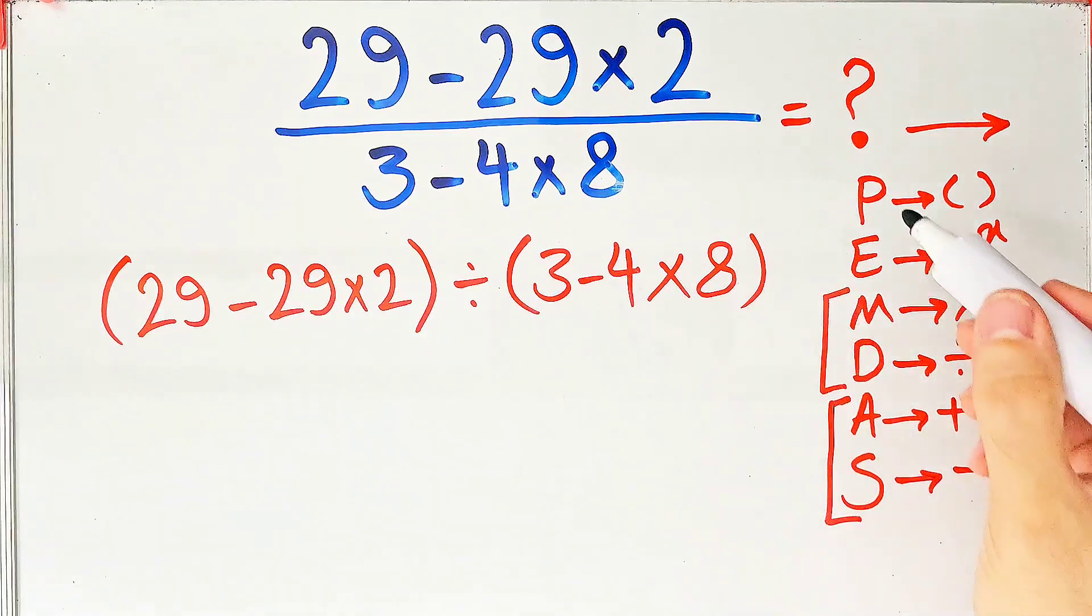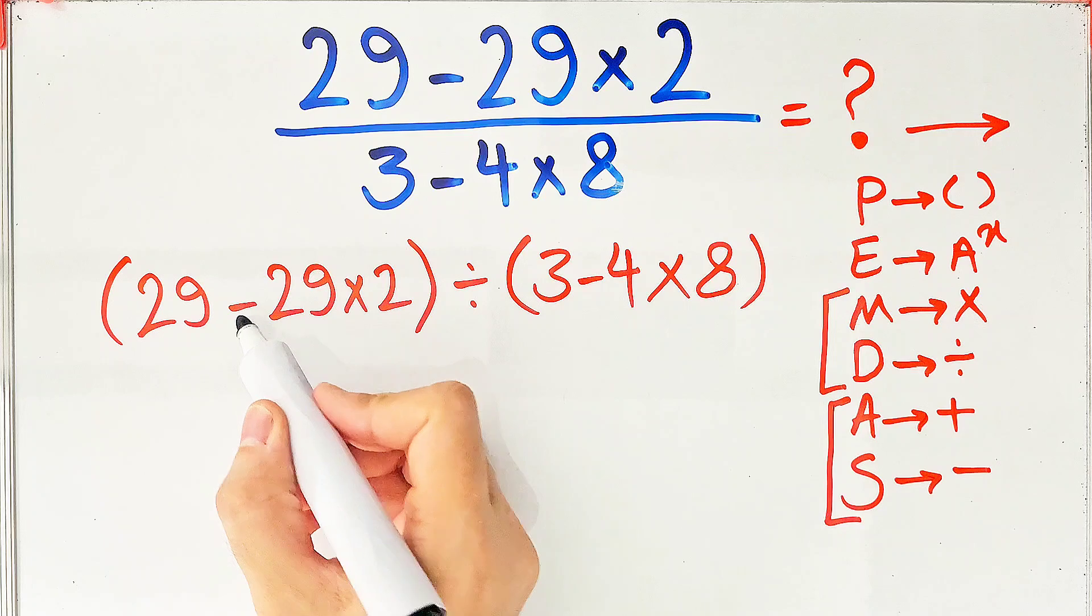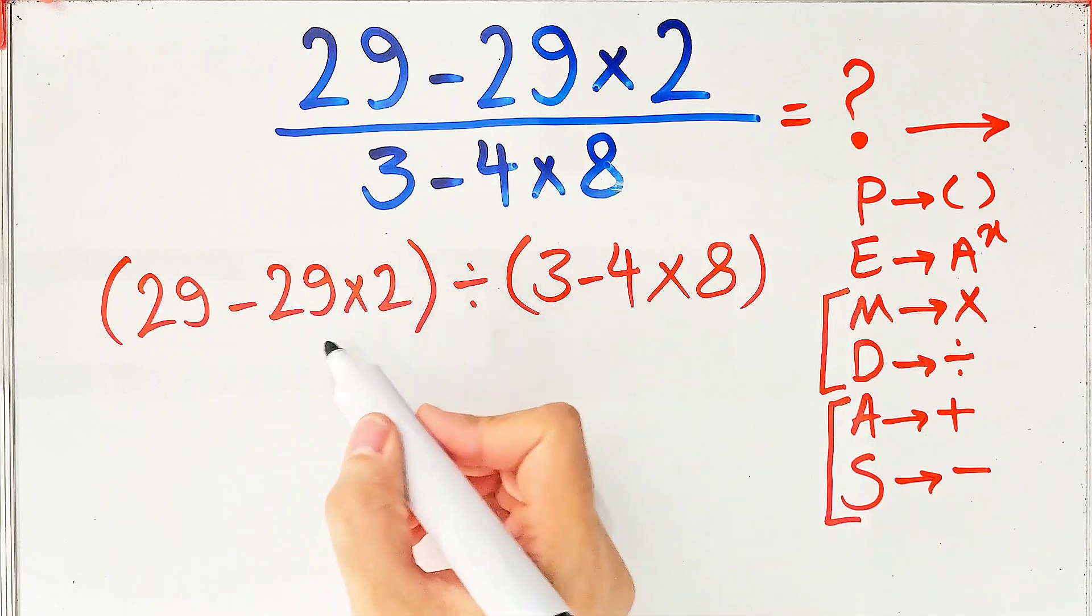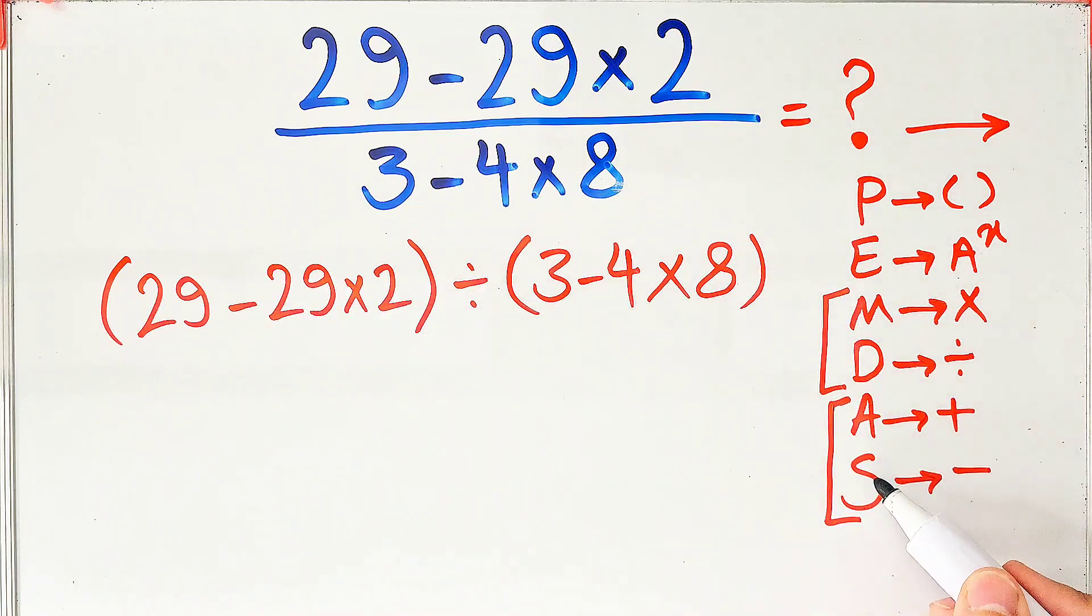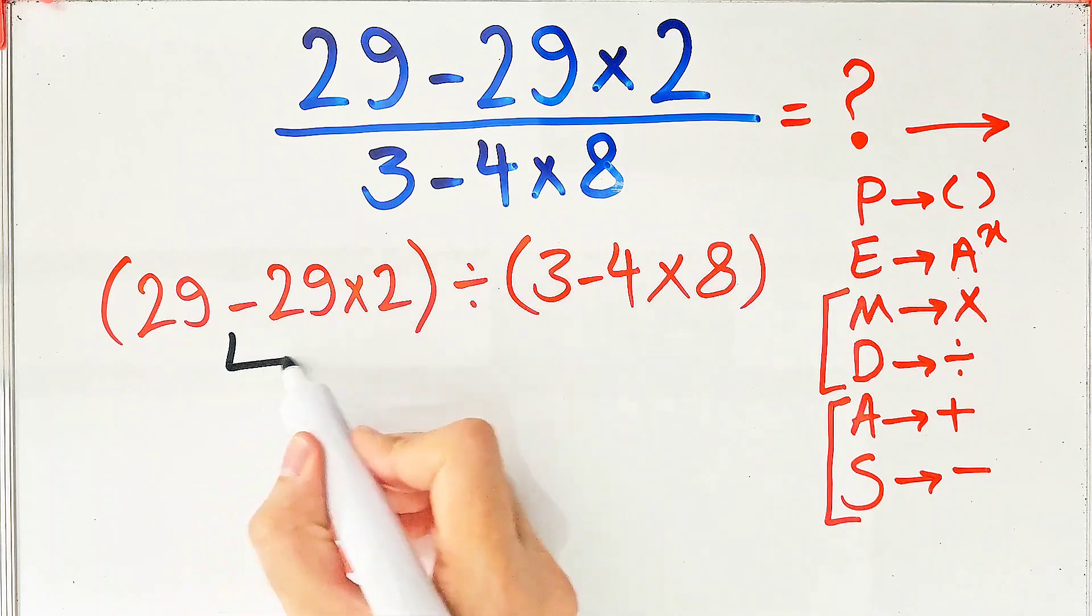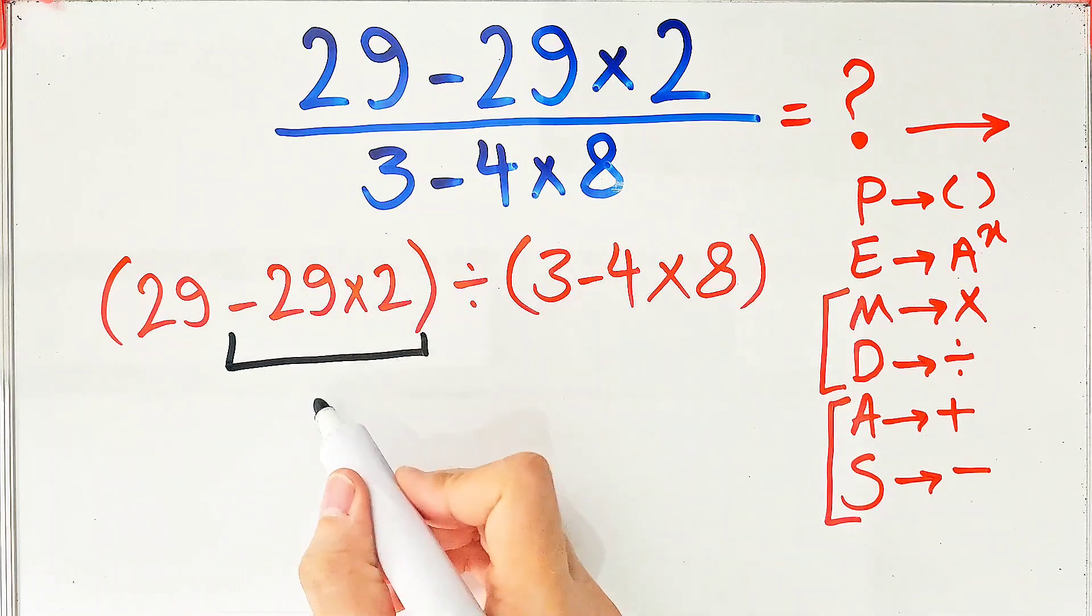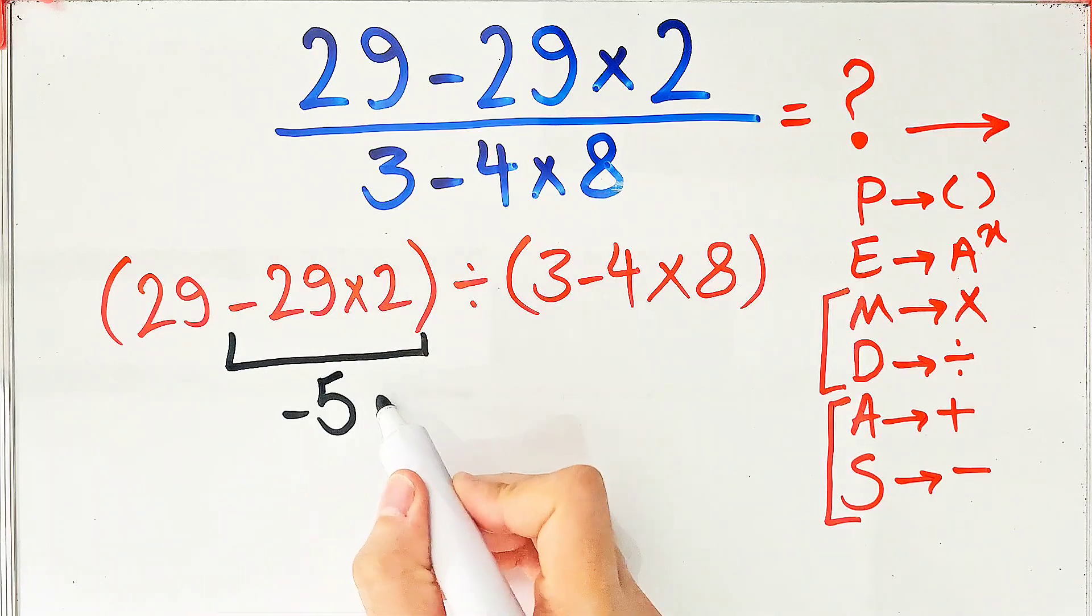Inside the first parentheses, we have subtraction and multiplication. First, we do this multiplication because multiplication has higher priority than subtraction. 29 times 2 equals 58.